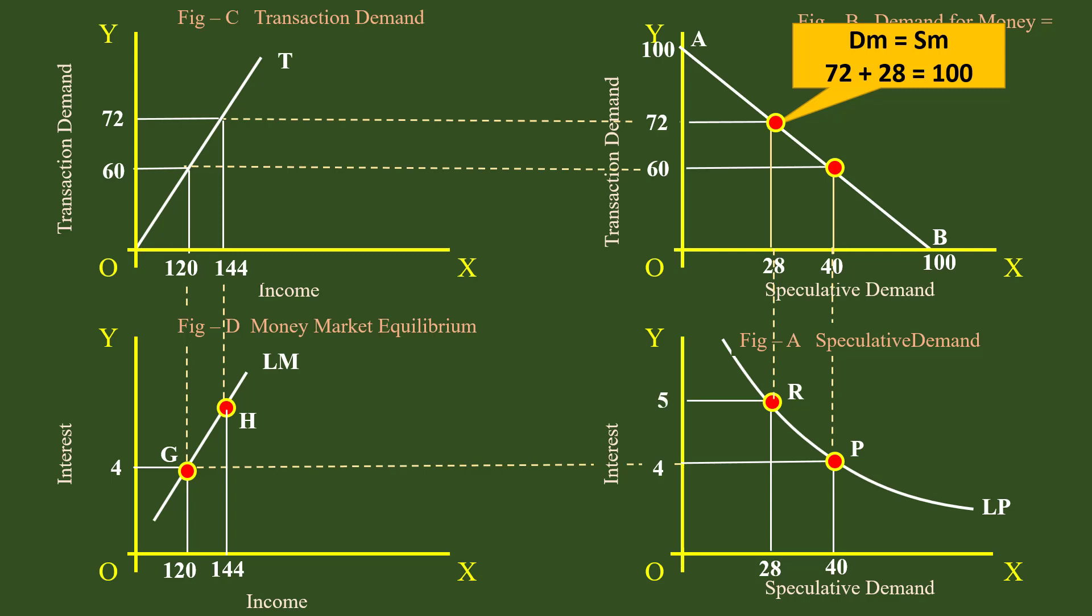But look at the interest rate. It is 5% now. Money market moves up along the LM curve and form a new equilibrium at point H.